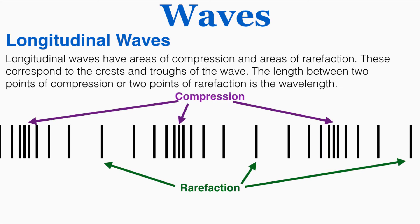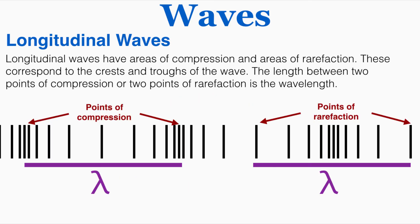Longitudinal waves have areas of compression and areas of rarefaction. These correspond to the crests and troughs of the wave. The length between two points of compression or two points of rarefaction is the wavelength. This is what I mean by compression and rarefaction, where the wave is stretching out the matter versus where it's compressing the matter. So the wavelength is the distance between any two of those points, either two consecutive points of compression or two consecutive points of rarefaction.